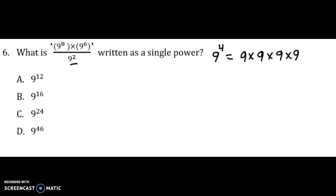So when we're looking at the expression we're given here, it means we've got 8 nines being multiplied by 6 nines, and then those are being divided by 2 nines.